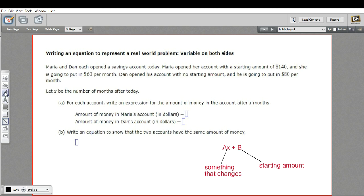So let's write that out. The amount of money in Maria's account is going to be $60 for every month, so 60 times X. After one month, this will represent 60. After two months, this will represent 120, plus the amount she put in from the beginning, which was $140. So that's our AX plus B form, 60X plus 140.